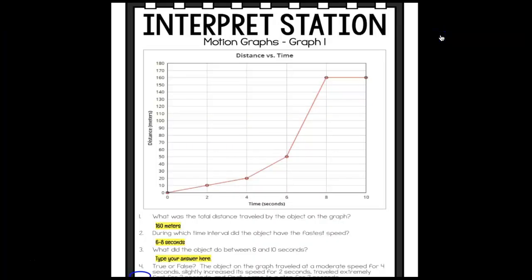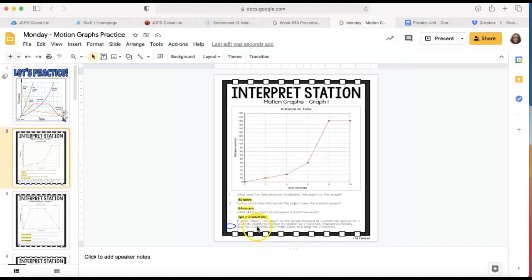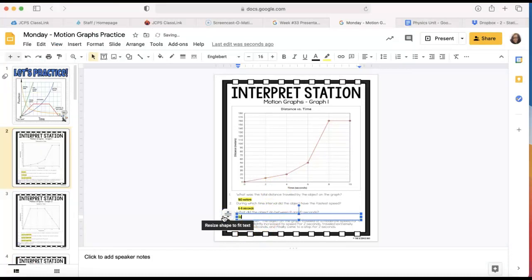The next question says, what did the object do between 8 and 10 seconds? We see this horizontal line. We know on a distance time graph that if we see a flat line like this, it means that it did not move. You can tell that because at 8 seconds it was at 160 meters, but then 9 seconds is still at the 160 meter mark, 10 seconds still at the 160 meter mark, which means it stopped. The object is at rest. So I'm just going to say it stopped.